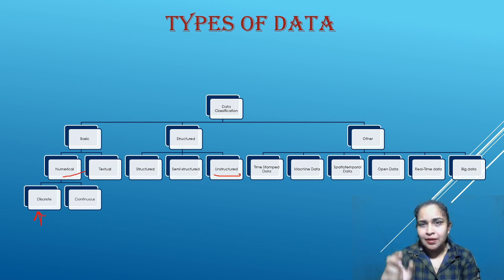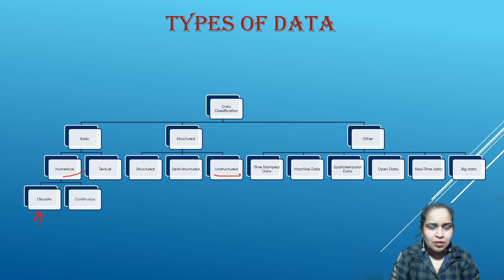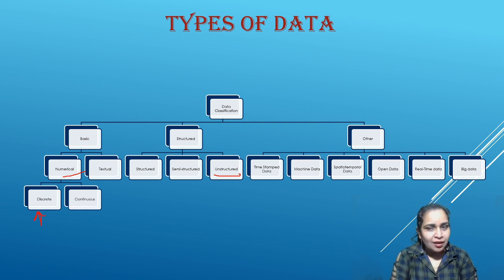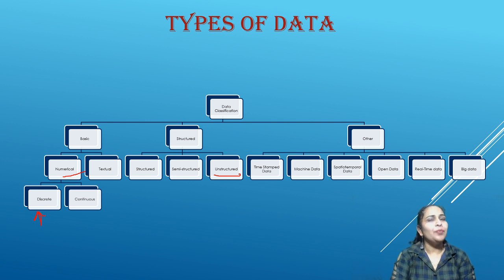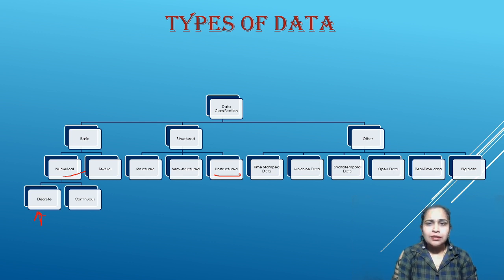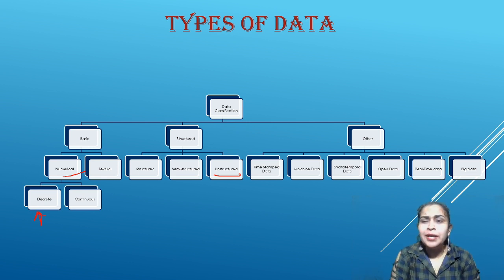Spatio-temporal data involves location. In Google Photos, when you click a photo, the location where it was taken is recorded. For example, during CBSE Class 12 Computer Science practical examinations, it is mandatory to click a geotagged photo — a photo containing latitude and longitude — of all students along with the internal and external examiners, and upload it on the website with the marks.